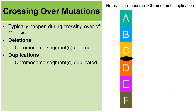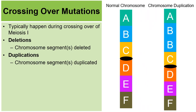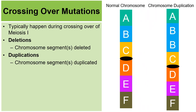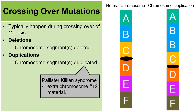There are also duplication mutations, where chromosome segments are duplicated. During crossing over, a segment got duplicated, leaving extra genetic information on the chromosome. An example is a syndrome caused by sufferers having extra material on chromosome number 12.